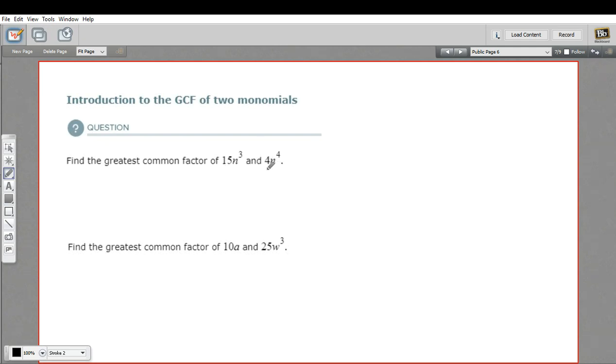When you get good at this, you've been experienced at it, you'll probably just be able to see this pretty quickly. What's the greatest common factor for the number part, and what's the greatest common factor for the variable part? But until then, there's a foolproof method for finding the greatest common factor, and that is just list all the factors.